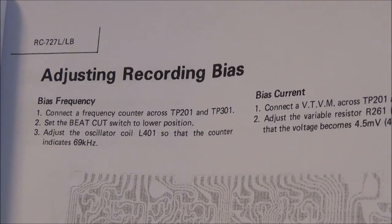In today's video I'm going to work on the JBC RC727 stereo cassette recorder again and I'm going to be adjusting the bias frequency and the bias current.